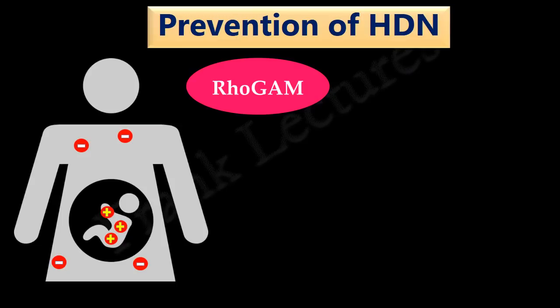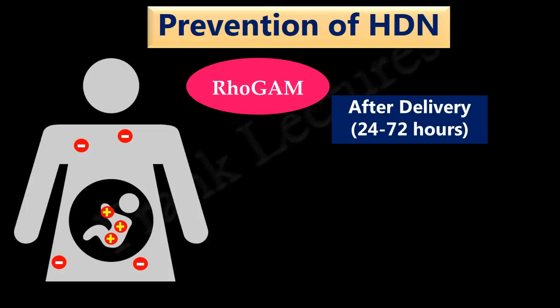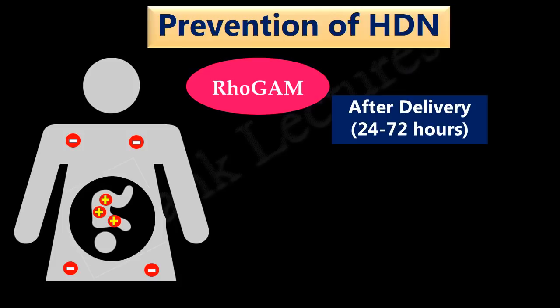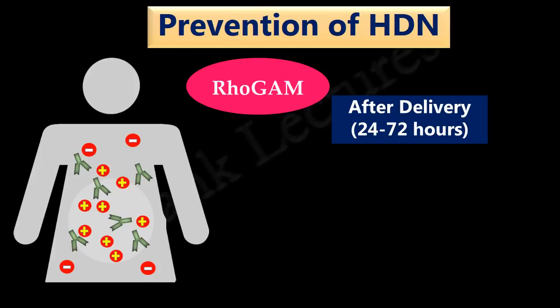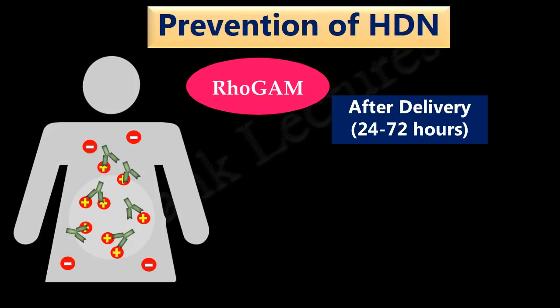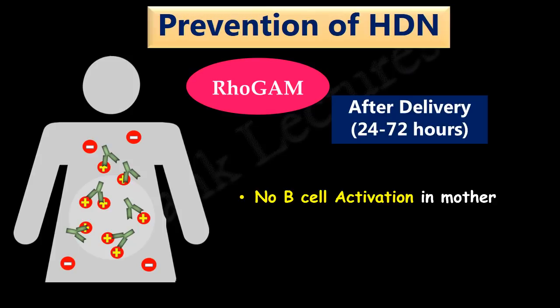Anti-RH antibodies are also injected into the mother within 24 to 72 hours after birth of the child, because delivery is when maternal-fetal hemorrhage occurs — the placenta separates from the uterine wall and large amounts of fetal RBCs enter the mother's circulation. Anti-RH antibodies injected within 24 to 72 hours after delivery will destroy all these fetal RBCs before they contact the mother's B lymphocytes, ensuring no memory B cells for RH antigens are produced. Thus, subsequent pregnancies in the immunized RH-negative mother will be safe.